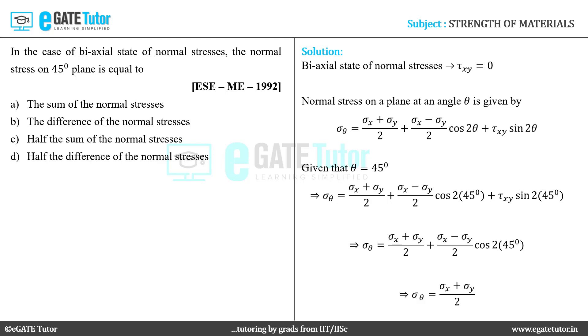sigma x plus sigma y by 2. That is half the sum of the normal stresses. Therefore, the correct option to this question is option c.